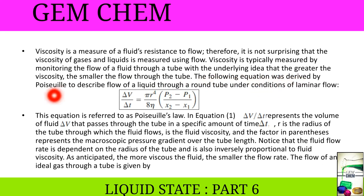Now, the following equation was derived by Poiseuille to describe flow of a liquid through a round tube under conditions of laminar flow, that is regular flow. Delta V by delta T equals pi r to the power 4 by 8 eta multiplied by P2 minus P1 by x2 minus x1. This is Poiseuille's equation and we will derive it in this video.